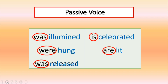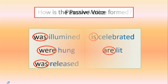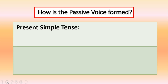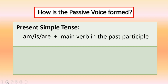So, how is the passive voice formed? The passive voice in the present simple tense is formed by using the present simple tense of the verb to be — that is, am, is, or are — followed by the main verb in the past participle form.